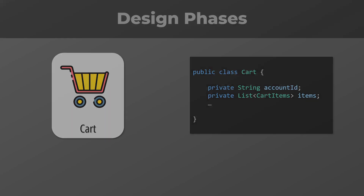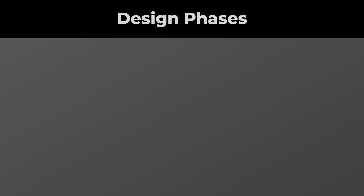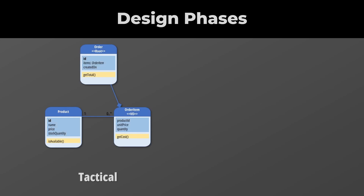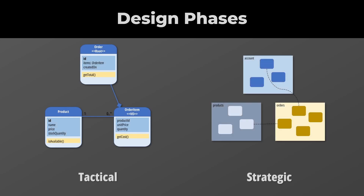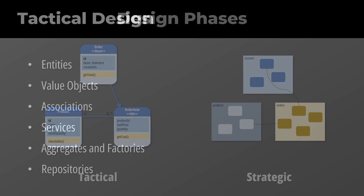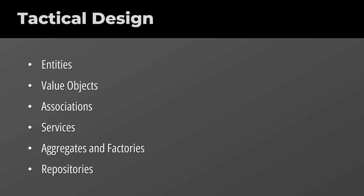How do we design a model? We divide the design into two phases: tactical design and strategic design. In the tactical phase, we focus on the lower level details, while in the strategic one, we look at the big picture. During the tactical design phase, we use the building blocks of DDD to create a detailed view of our model. We use entities, value objects, associations, and other constructs.